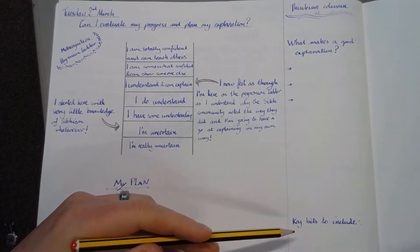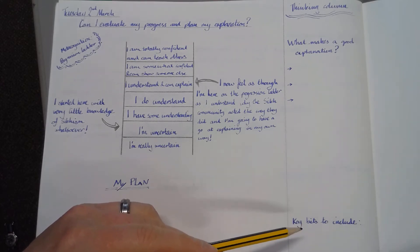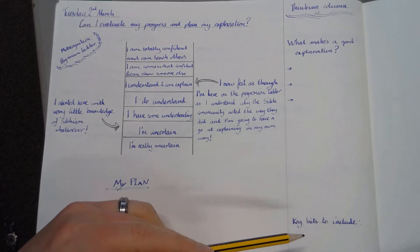I've also got down here key bits to include. This is important to put in our thinking column because it's going to be my reminder for what I want to put all the way through my explanation, however I'm doing that.